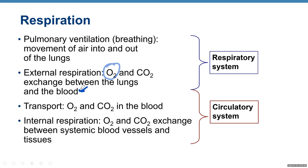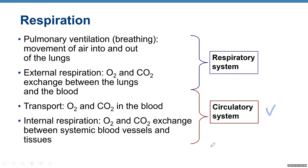Once oxygen is in your blood, process number three is transport — transporting oxygen to the cells via blood and transporting carbon dioxide in blood back to the lungs. This is a function of the circulatory system. The fourth process is internal respiration: oxygen and carbon dioxide exchange between systemic blood vessels and tissues, also a function of the circulatory system.